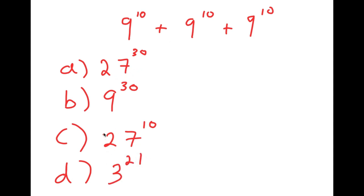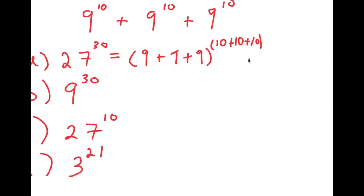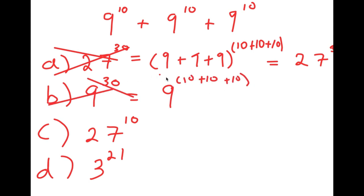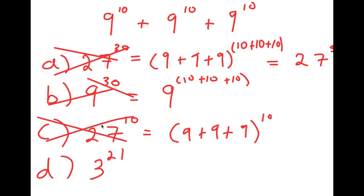Let's go through all the answer choices to see if they're right or not. Answer A, 27 to the power of 30, was likely gotten by adding all the bases and adding all the exponents: 9 plus 9 plus 9 to the power of 10 plus 10 plus 10, giving 27 to the power of 30. This is wrong — that's not the proper way to add exponents. Answer B, 9 to the power of 30, was likely gotten by keeping the base the same and adding the exponents, which is also wrong. Answer C, 27 to the power of 10, was gotten by adding the bases but keeping the exponent the same, which is also wrong.